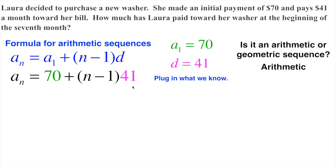Now that we have this formula worked out specific to this problem, we need to determine how much she's paid toward the washer at the beginning of the seventh month. So 7 is what we're going to plug in for n. In both cases here, I'm going to plug in 7. You could just simply plug that into your calculator and it would spit out the answer. If you want to do it by hand, that's not a problem either.